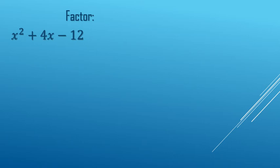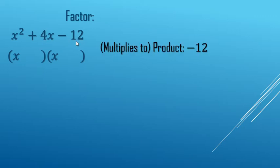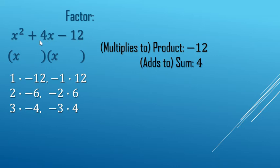All right, to factor this type of quadratic expression, we're going to do an unfoil type idea. I know that the first need to multiply together to make x squared, so x and x, and then the last need to multiply together to make a negative 12. List of numbers there. They also need to add to a positive 4.